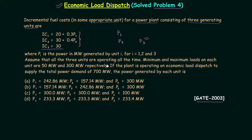Assume all three units are operating at all times. The minimum and maximum loads on each unit are 50 megawatt and 300 megawatt respectively. If the plant is operating on economic load dispatch to supply a total power demand of 700 megawatt, we need to find the power generated by each unit — P1, P2, and P3.